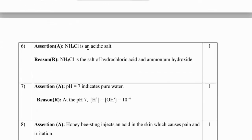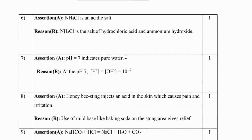Next question: NH₄Cl is an acidic salt formed from hydrochloric acid and ammonium hydroxide. Both statements are true - NH₄Cl is indeed the salt of hydrochloric acid and ammonium hydroxide.